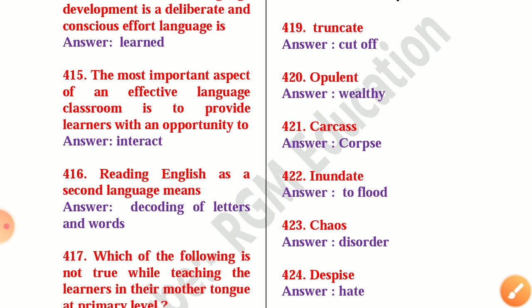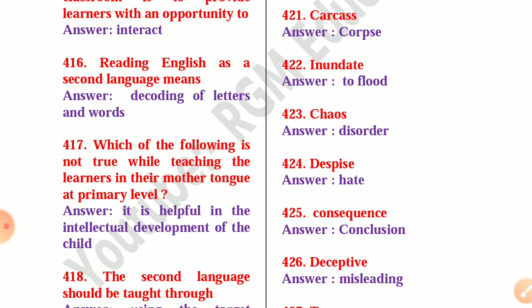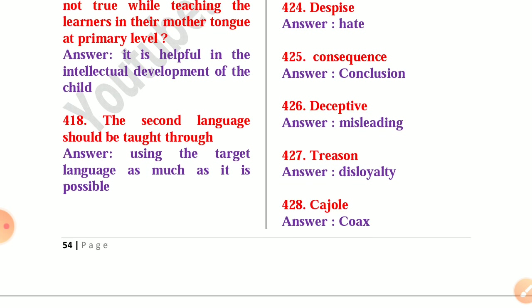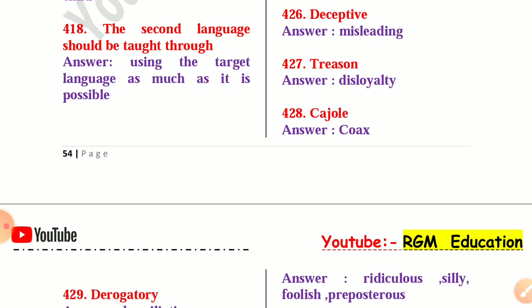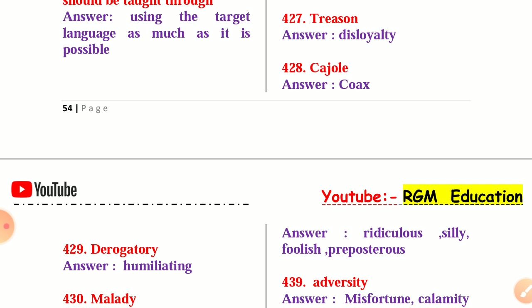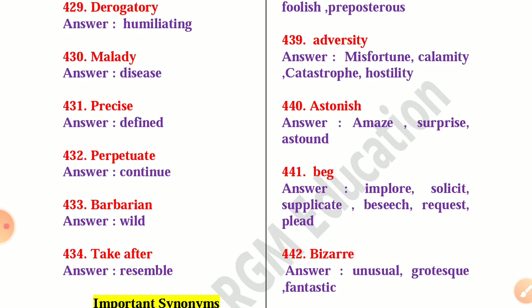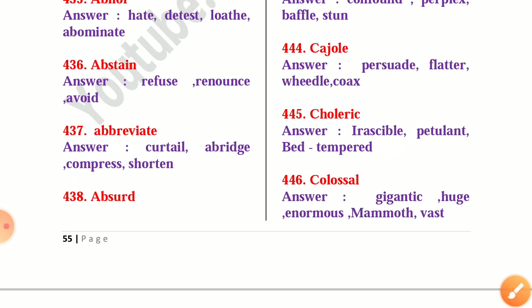Synonyms: truncate — cut off; opulent — wealthy; carcass — corpse; inundate — to flood; chaos — disorder; despise — hate; consequence — conclusion; deceptive — misleading; disloyalty; casual; coax. There are a lot of synonyms and you will get 100 synonyms in this part.